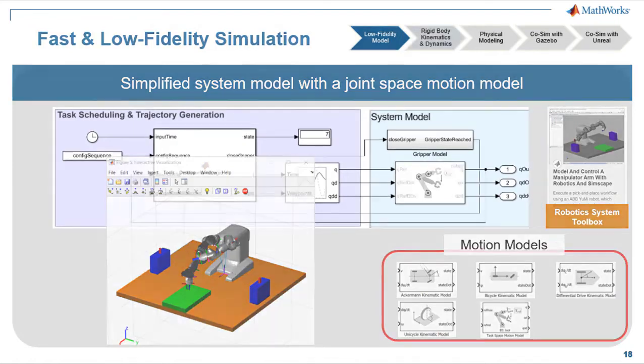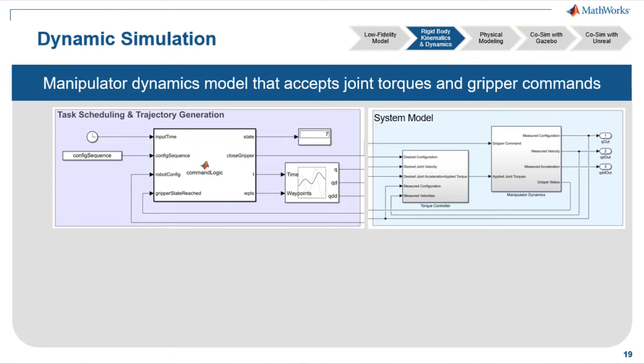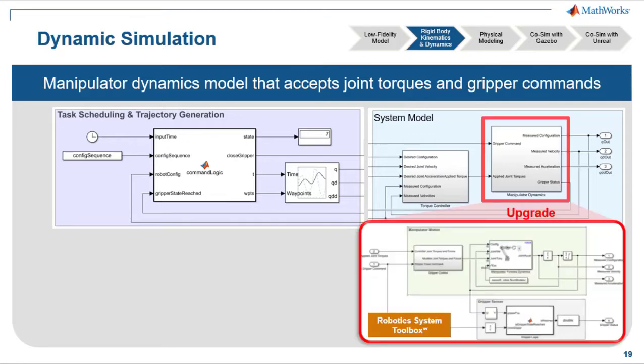So later on, you probably want to upgrade this model to something more complex, something that's closer to what your real robot, how your real robot behaves. So after this kind of task scheduling has been designed and verified, you probably want to model the controller for your robot. Again, a more complex manipulator dynamics model is needed that takes joint torques and gripper commands and you probably need a torque controller for this robot. The power of model-based design is that the rest of the system model stays the same. So you can run the same verification test as before and verify that your arm behaves correctly. Again, here's just one example in the tools that we built here at MathWorks that would simply allow you to iteratively replace your robot model with higher fidelity components.